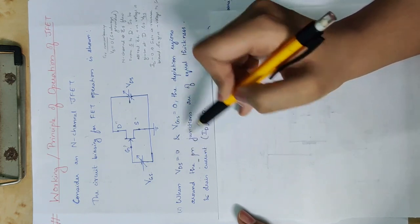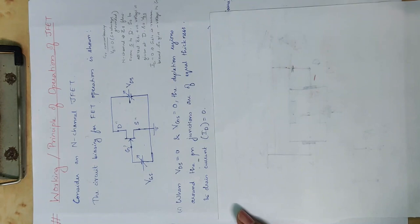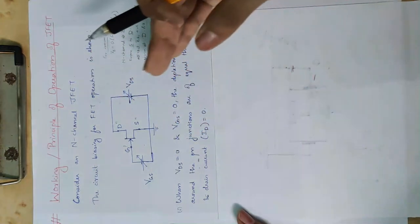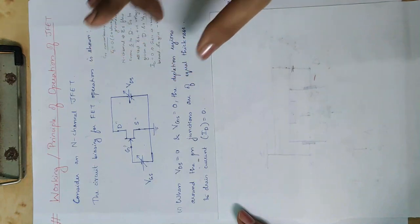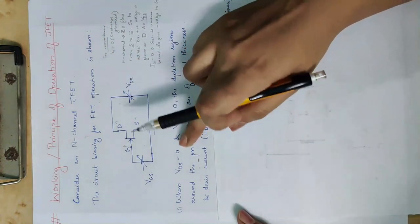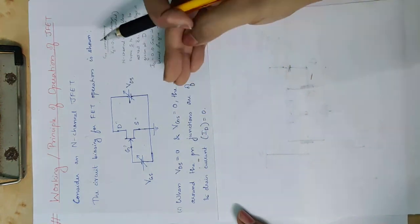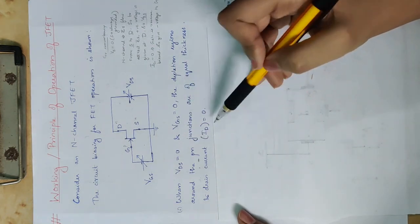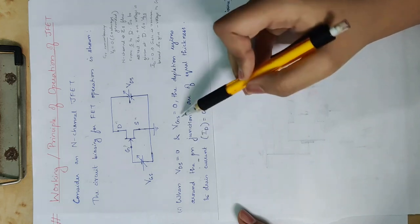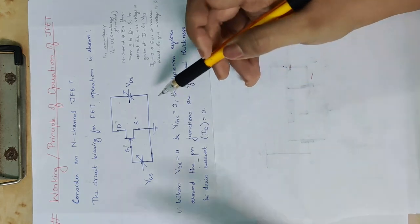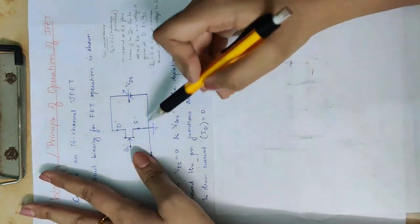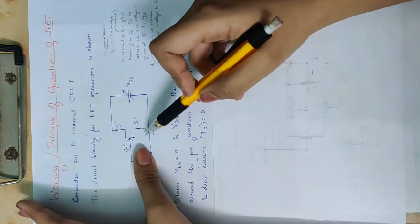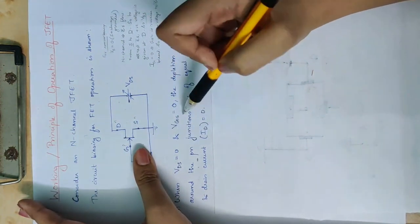We will learn the characteristics curves of JFET. We are going to analyze the drain current. When VDS equals zero and VGS equals zero, there is no current flow. Suppose VGS is zero — that is, we do not connect a voltage source across the gate. That means VGS is zero.